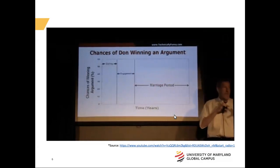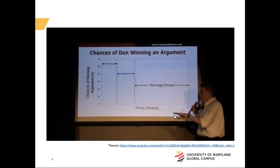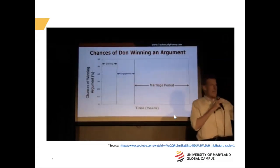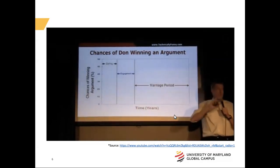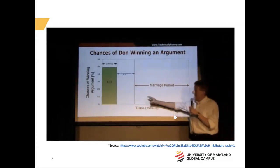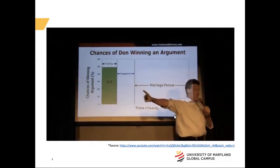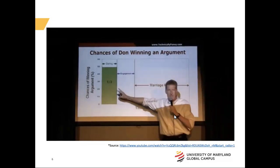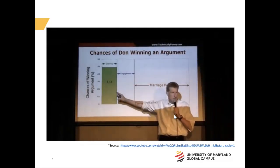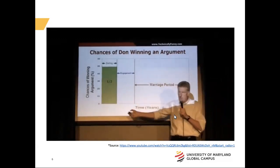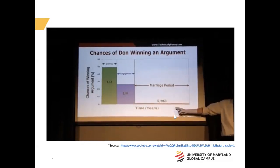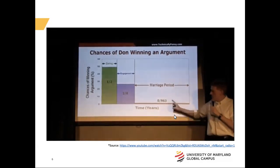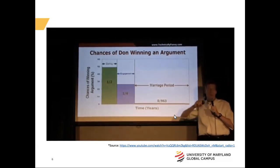Now let's look at the more challenging parts of relationships. He analyzed why he was losing so many arguments. He plotted the chances of winning an argument versus time — three distinct periods emerged. When first dating: a 50-50 shot — those are Hall of Fame numbers. Once engaged, it dropped to one in four. And since being married, he is zero for 963. He thought he won once — they argued about who won the argument — and he lost that one too.